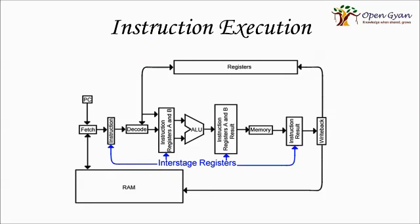This is a flow diagram of how an instruction is executed on a processor. The first stage is that of fetching. The instruction is fetched from the program counter or from the RAM and is being kept on the fetch stage. There are interstage registers between each and every stage. After the fetch stage, the instruction is being decoded and then the instruction that is being decoded is being kept in the A and B instruction registers.